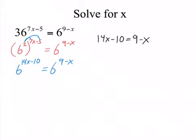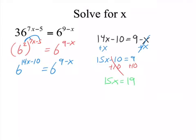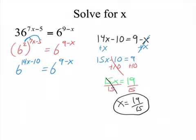I'm simply going to solve this equation. Once I solve it, I am done. So I'm going to add the x over. That gives me 15x minus 10 equals 9. I'm going to add the 10 over. That gives me 15x equals 19.